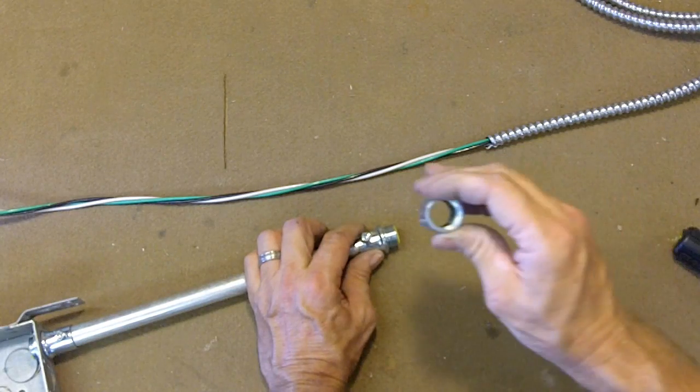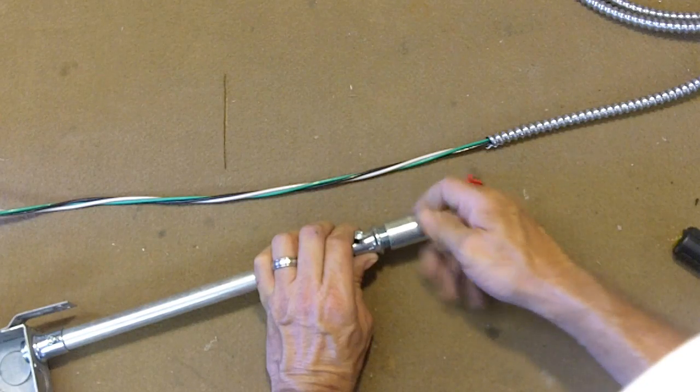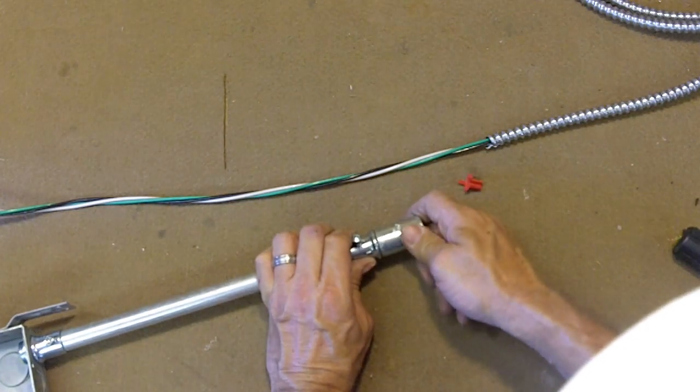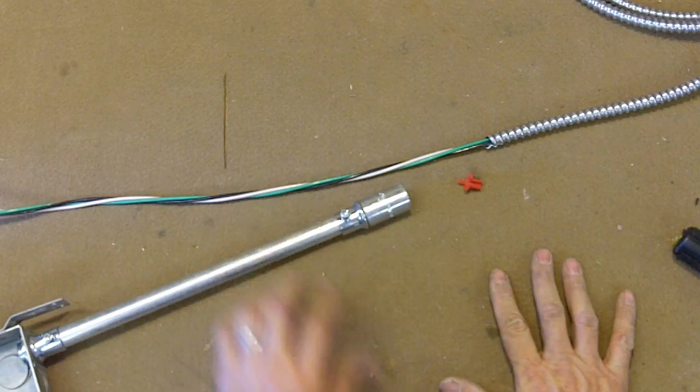And then we'll take a half inch GRC coupling, thread that onto the connector. And we're not going to tighten it down yet and I'll show you why in just a second.